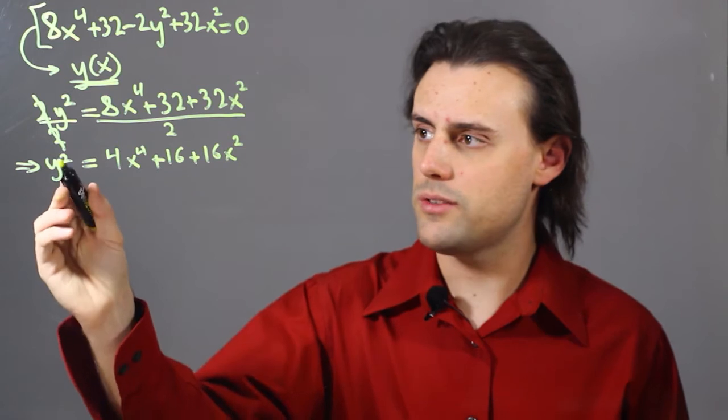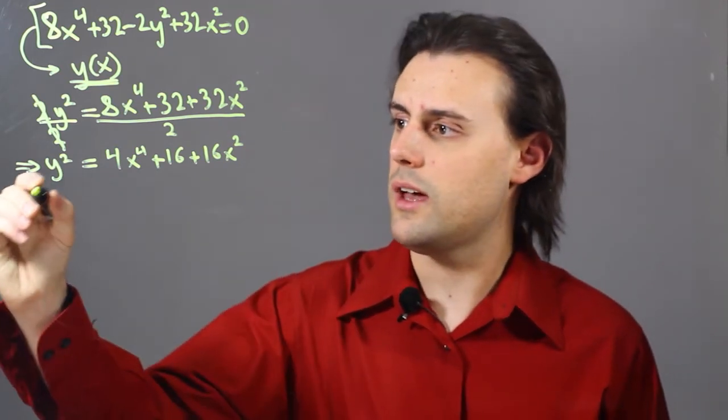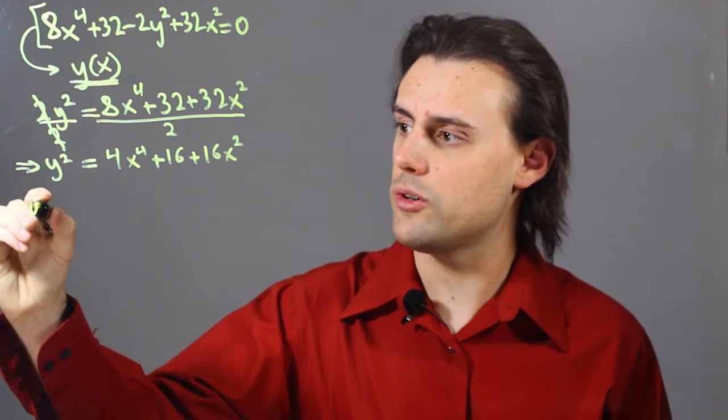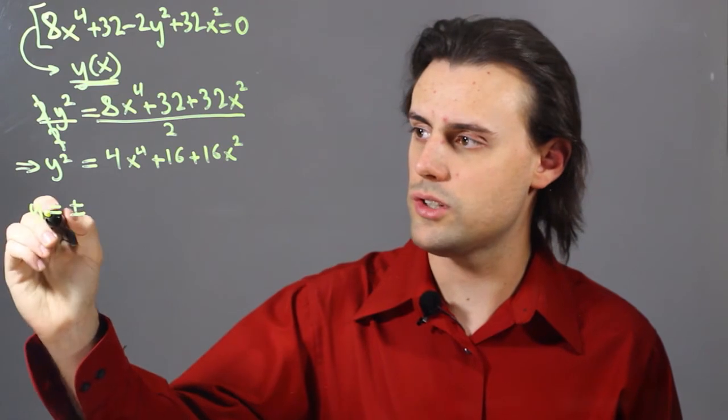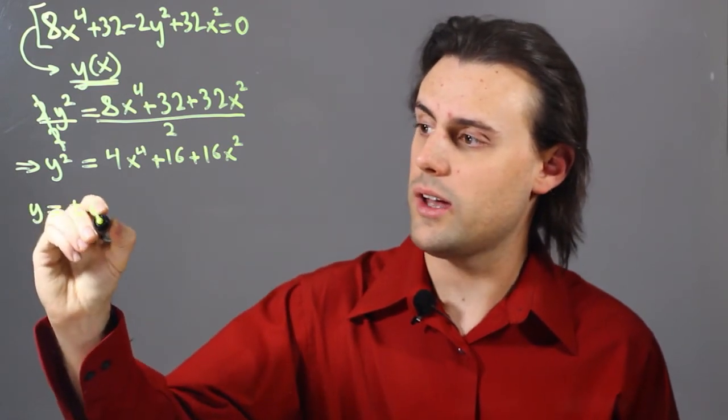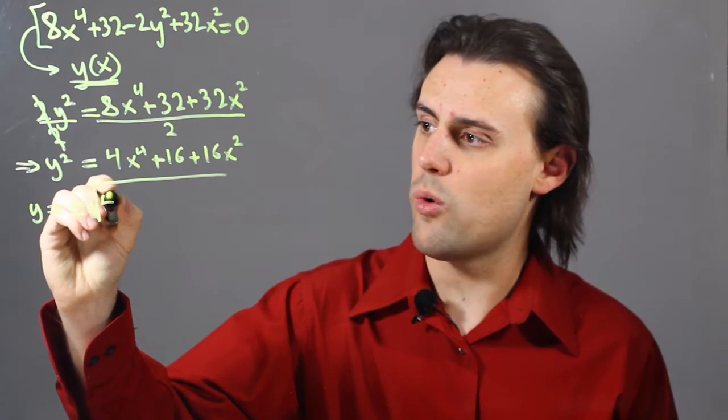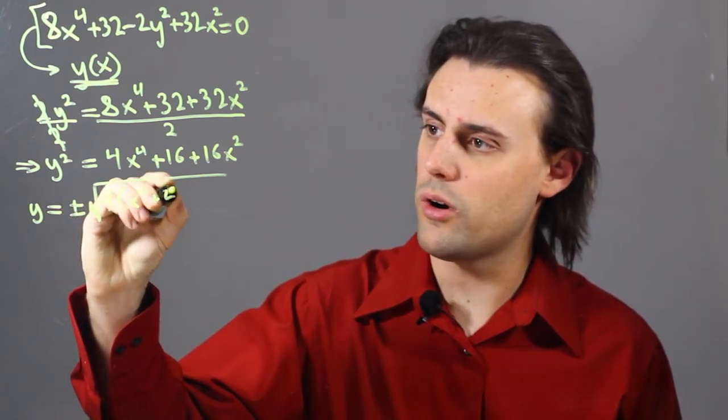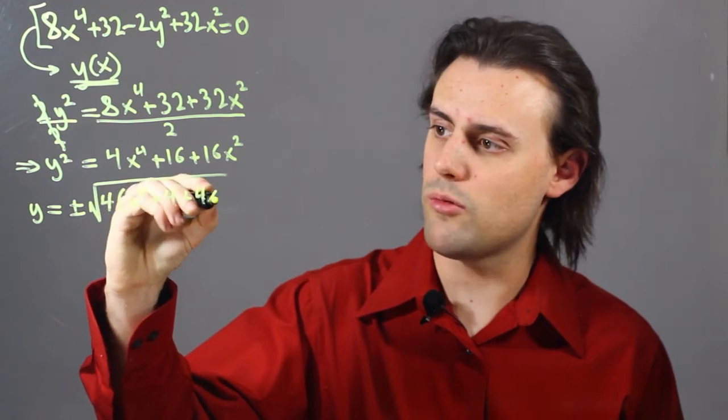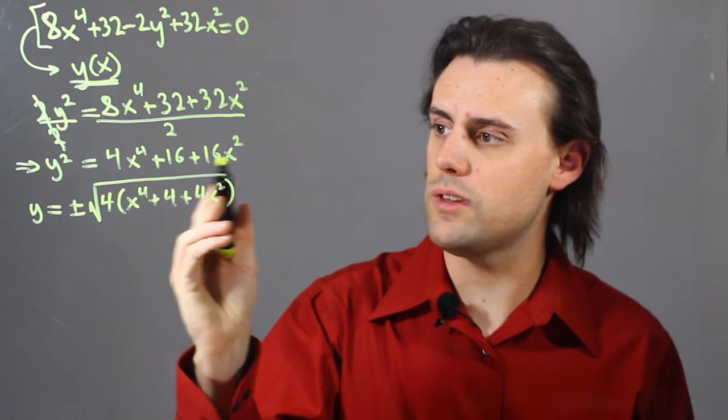Now, because I have a square here, I'm going to want to take the square root of both sides, and because it's an even power, I'm going to have a plus and a minus as two possible solutions for my y. So I have plus minus the square root of 4 times x to the fourth plus 4 plus 4x squared, where I have factored out a 4 from each of these three terms.